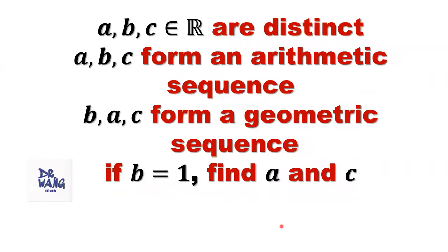Hello everyone, I'm Dr. Wen. Here is the question. If A, B, C are real numbers and distinct, in this order A, B, C form an arithmetic sequence. If we switch the order, B, A, C form a geometric sequence. If B equals 1, we want to find A and C.